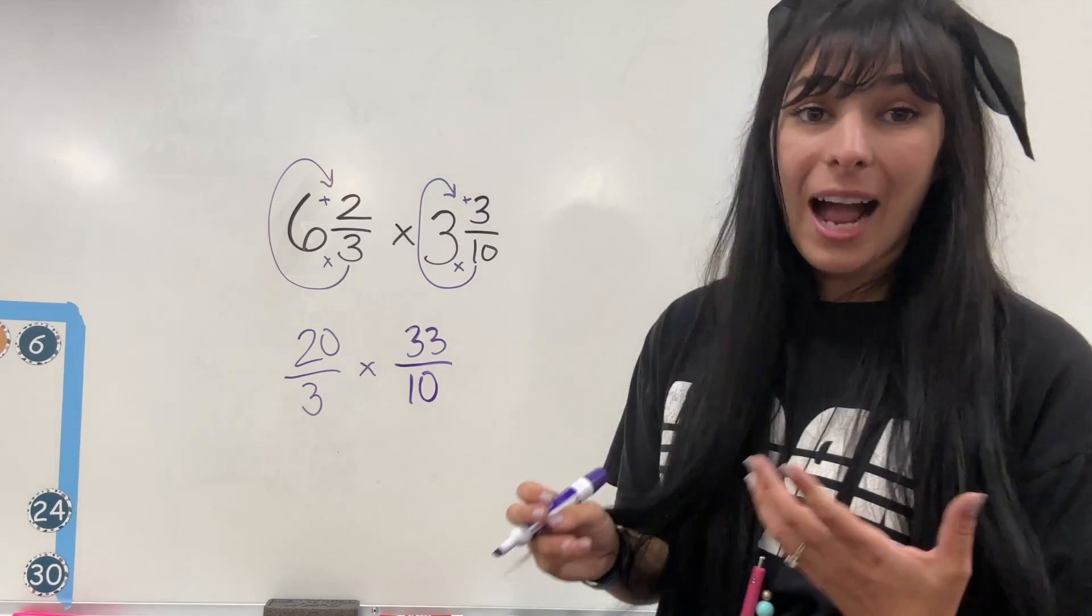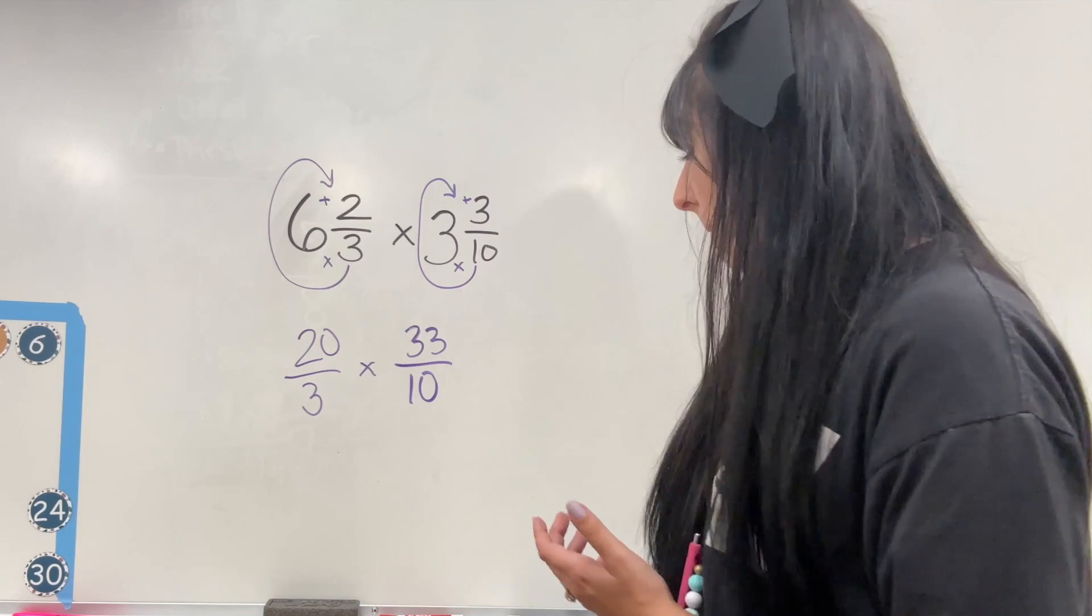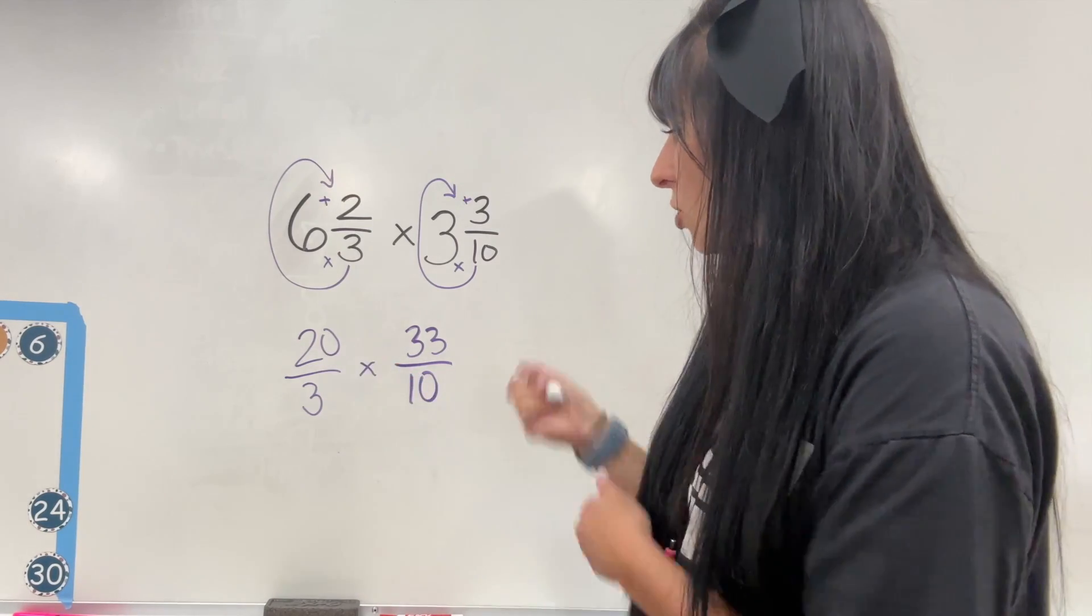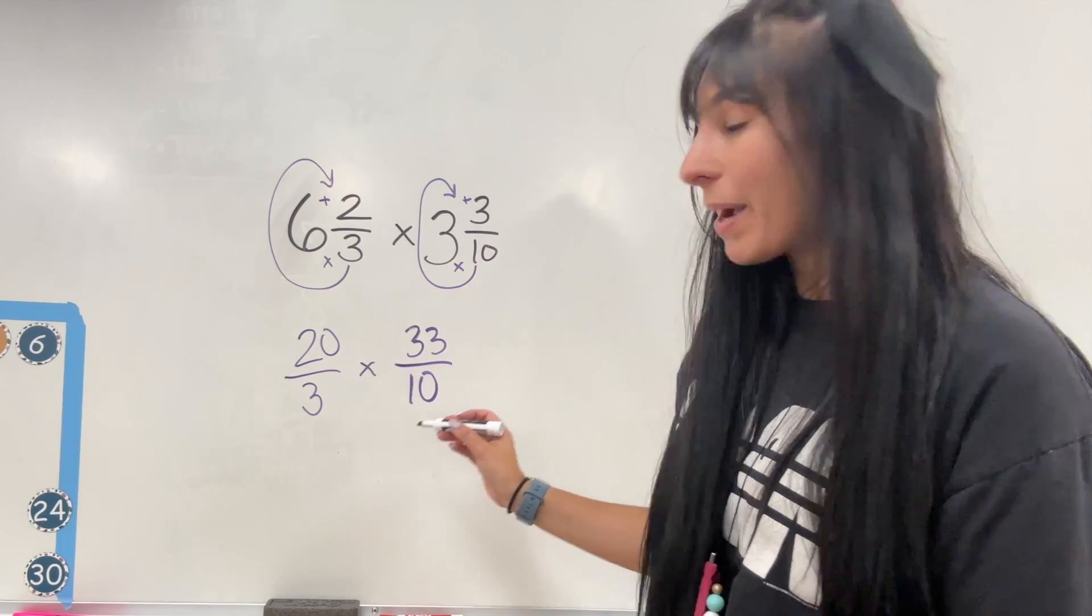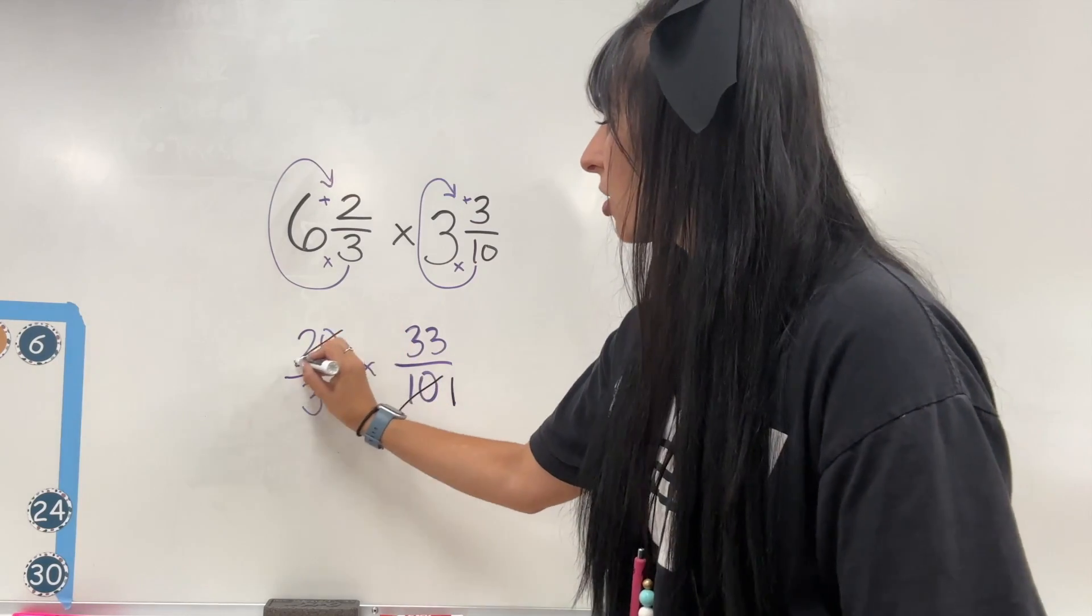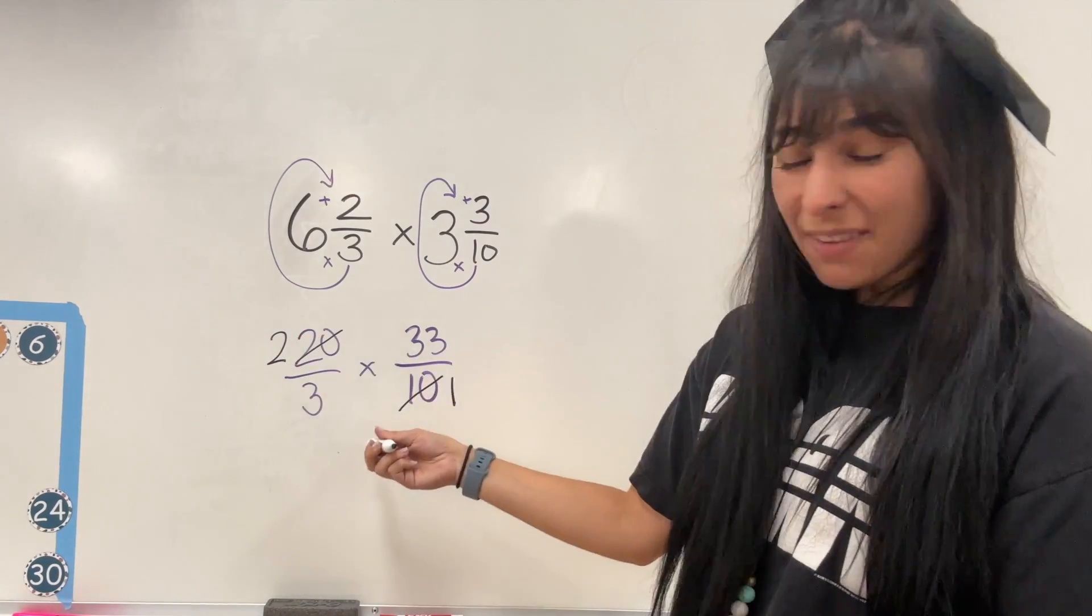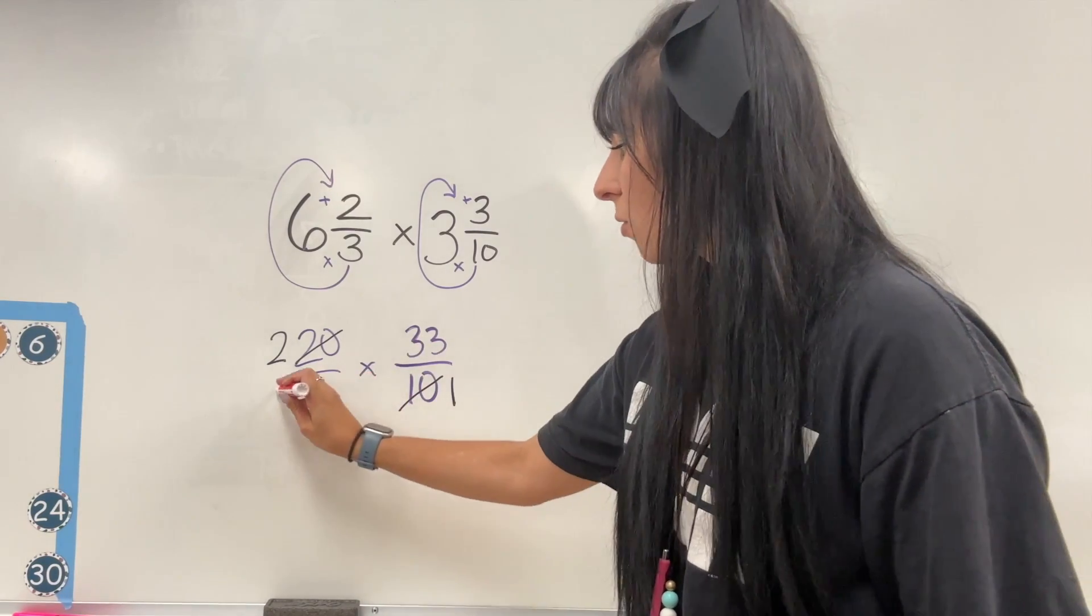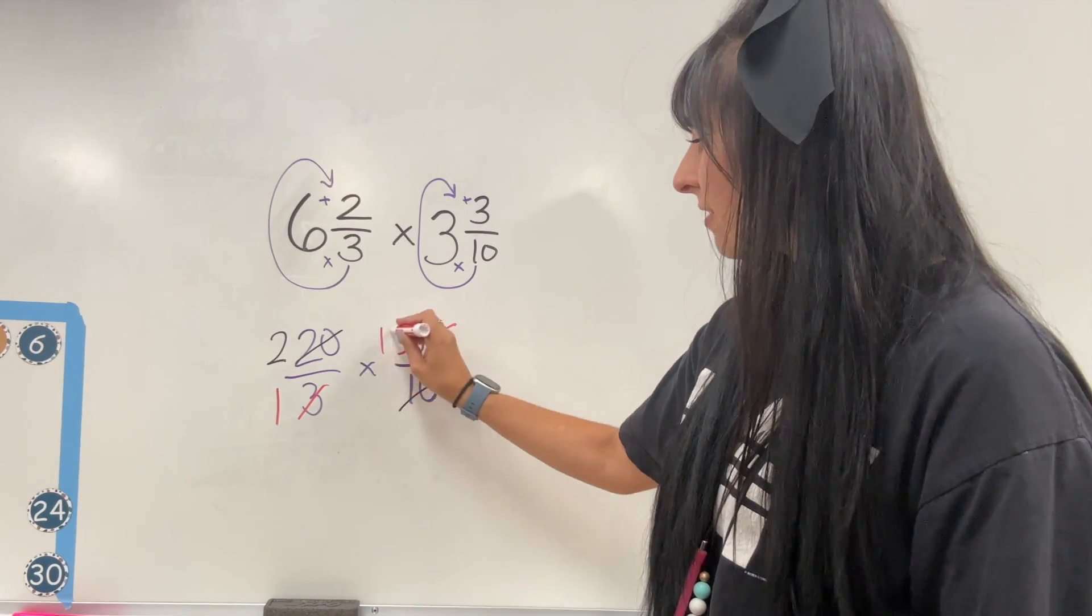Now from here, I can actually simplify. So I do not have to multiply these big numbers. In order to simplify, I have to simplify across. So I can see 10 and 20 are both divisible by 10. So 10 can go into 10 one time, 10 can go into 20 two times. I can even simplify the diagonal numbers. Three can go into three one time and three can go into 33 eleven times.